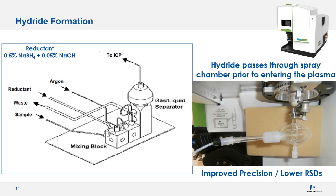One modification we made was passing the output of the gas-liquid separator through the spray chamber rather than directly to the ICP. This gave better precision — lower RSDs, less noisy signal, and ability to see lower levels. We did not observe any washout or carryover effects despite the gas phase species passing through the larger spray chamber volume. Implementation was simple: we cut a 5 cm piece of Tygon tubing from the normal nebulizer line and used an adapter to connect the GLS output into the spray chamber — no special tubing required.